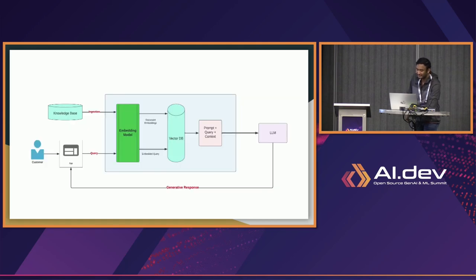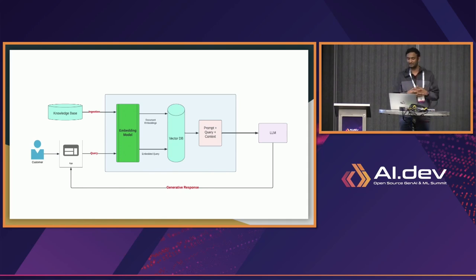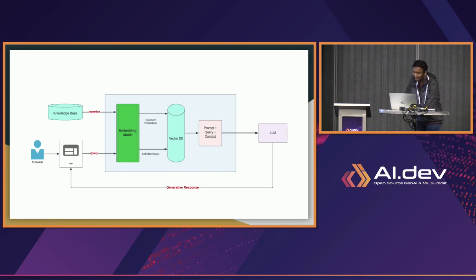Now let's get into the technicalities of the architecture and why RAG is fascinating. It essentially merges two concepts: first is the neural retrieval model, and then LLM. For any enterprise, the center of their entire system is the knowledge base. What we start doing is we convert this knowledge base — it could be knowledge articles, documents, chat histories, or anything — into something called embeddings.